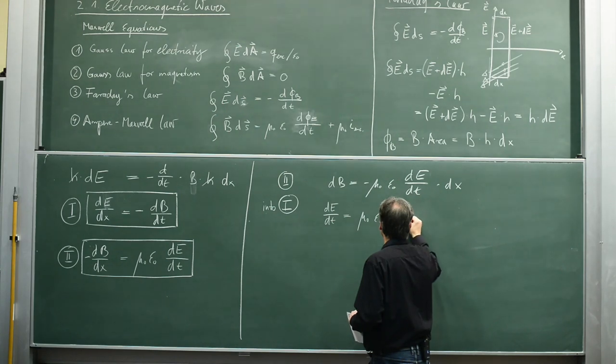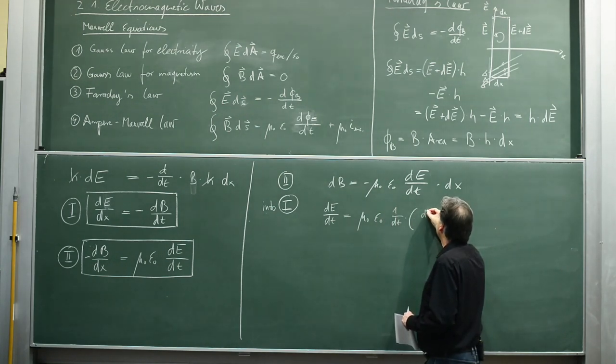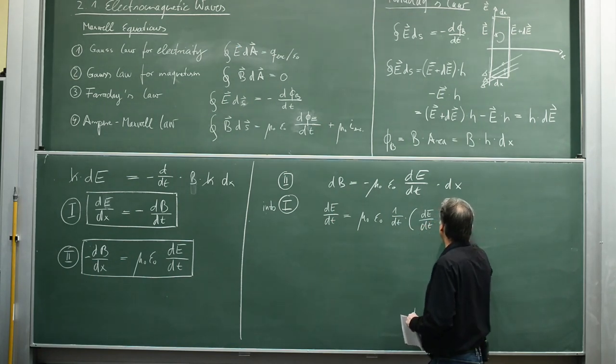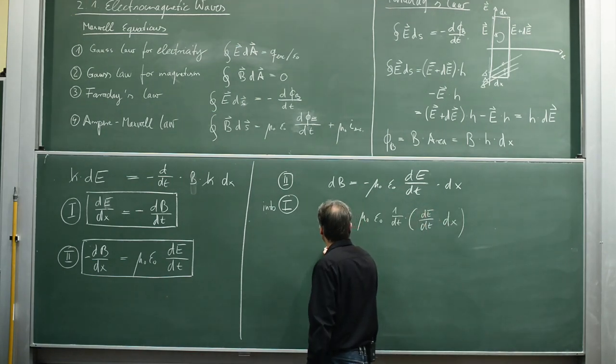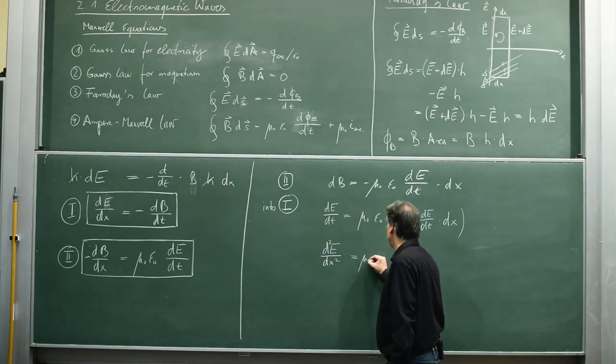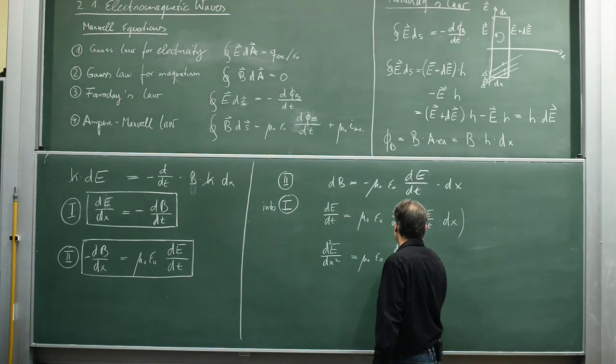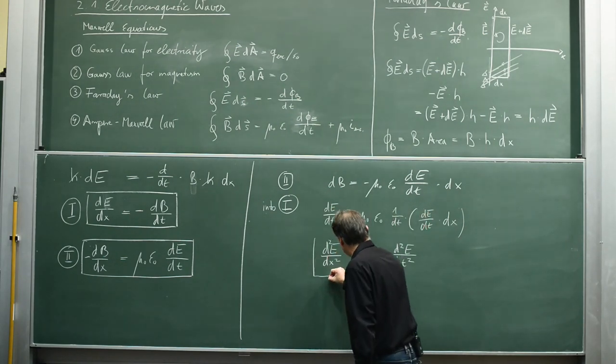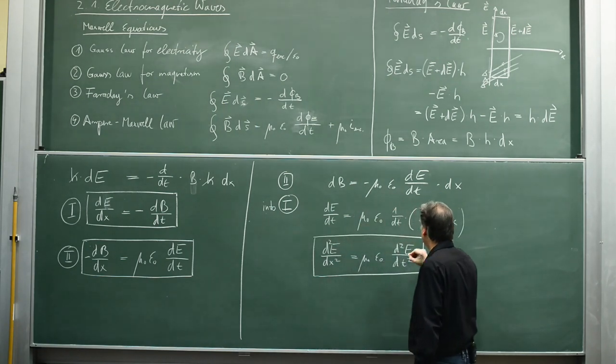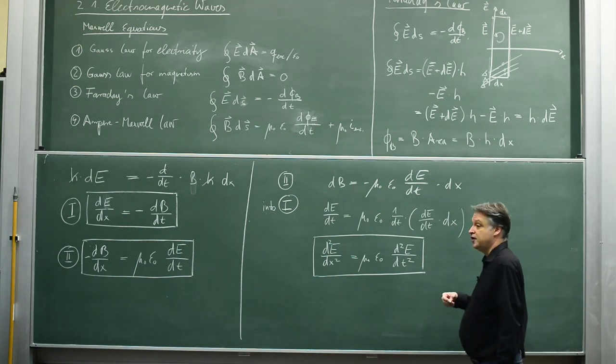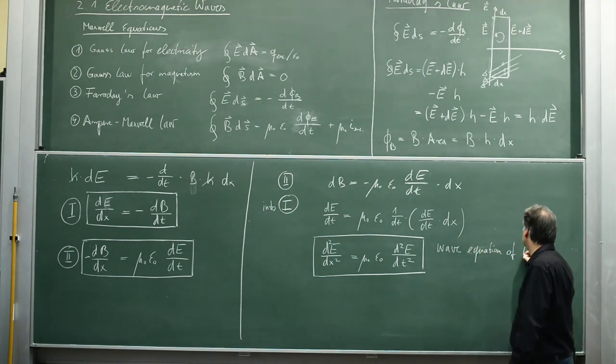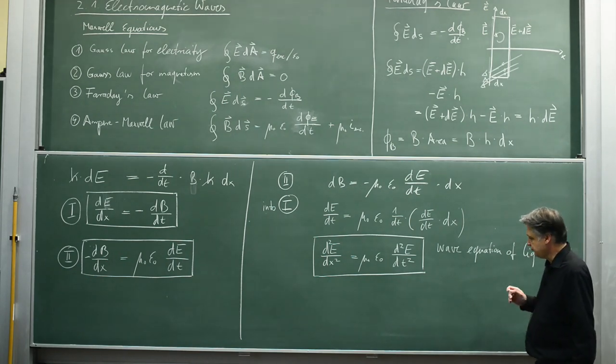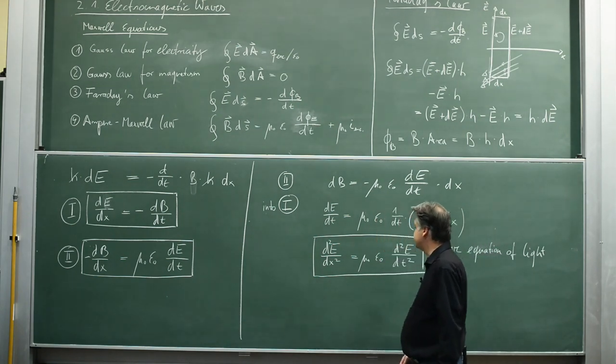Now we substitute dB with the following expression: one divided by dt times dE by dt times dx. We can sort that a little bit. The following expression can be written: d squared E by dx squared is mu naught epsilon naught d squared E by dt squared. This is the wave equation of light, the wave equation of the electromagnetic radiation.